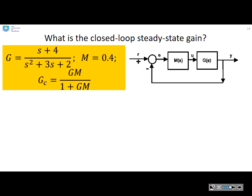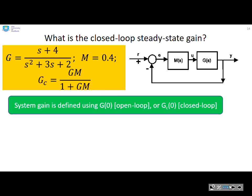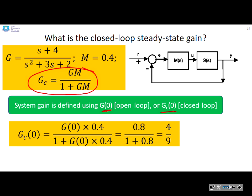What is the closed loop steady state gain? So what you need to remind yourself is that system gain is basically defined by setting s equals 0. So g of 0 for open loop, gc of 0 for closed loop. And I've reminded you here of what the closed loop transfer function is given us. So I can simply write gc of 0 equals g of 0 times 0.4, because that's what m is, over 1 plus g of 0 times 0.4. And you can see the answer reduces to 4 ninths.